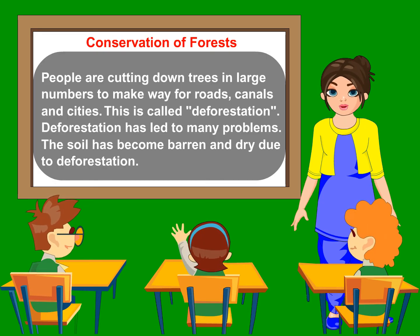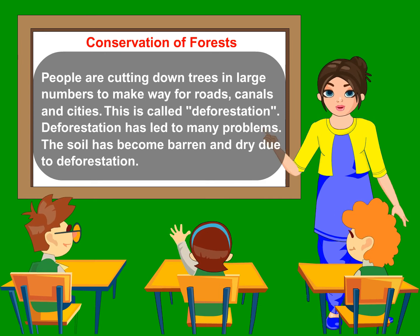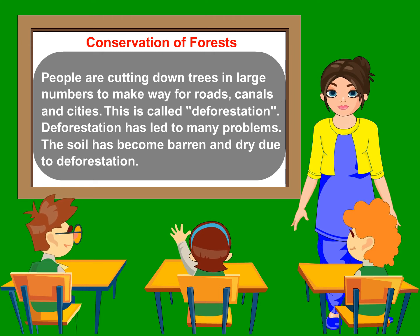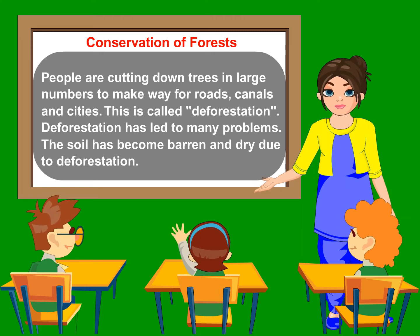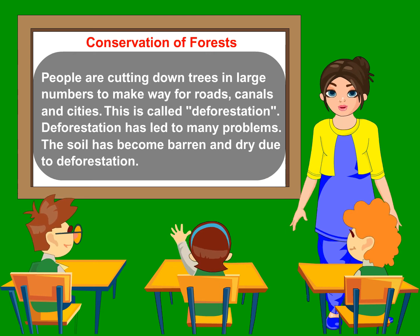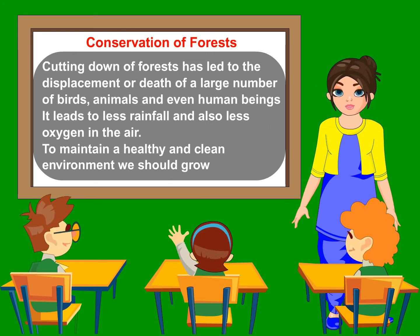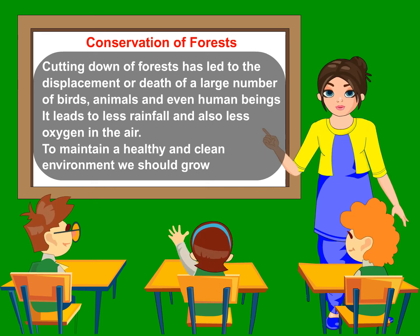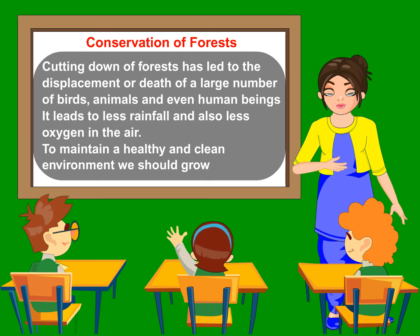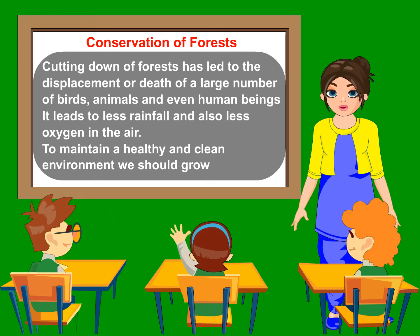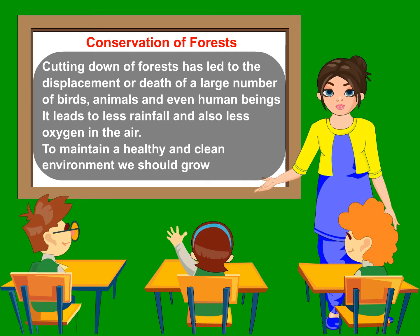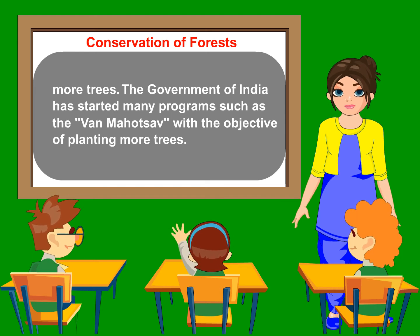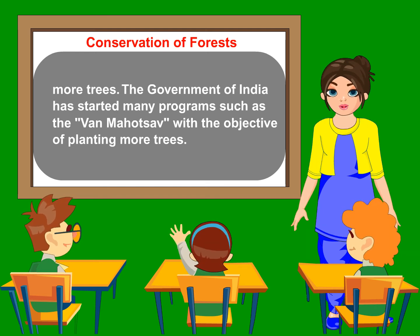Conservation of Forests. People are cutting down trees in large numbers to make way for roads, canals and cities. This is called deforestation. Deforestation has led to many problems. The soil has become barren and dry due to deforestation. Cutting down of forests has led to displacement or death of a large number of birds, animals and even human beings. It leads to less rainfall and also less oxygen in the air. To maintain a healthy and clean environment, we should grow more trees. The government of India has started many programs such as the Van Mahotsav with the objective of planting more trees.